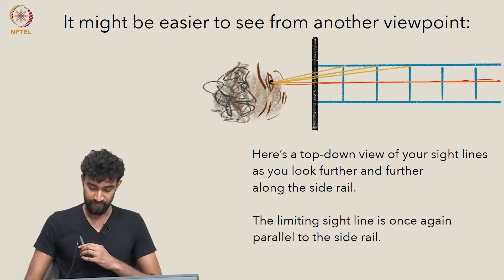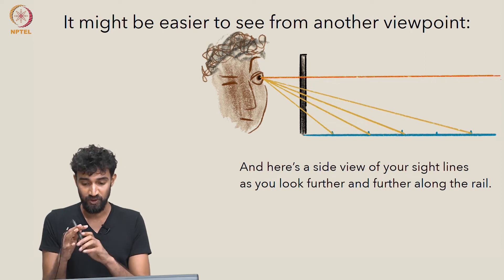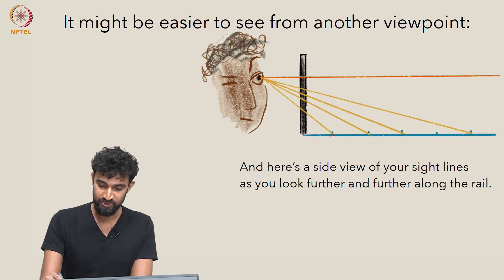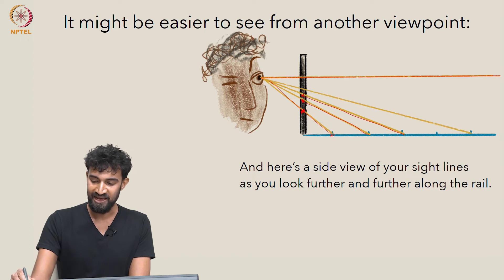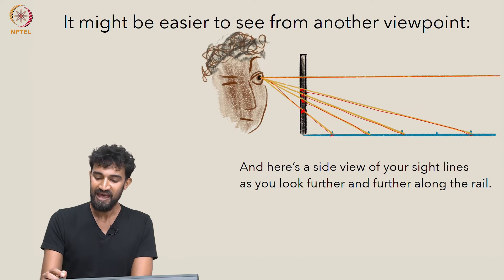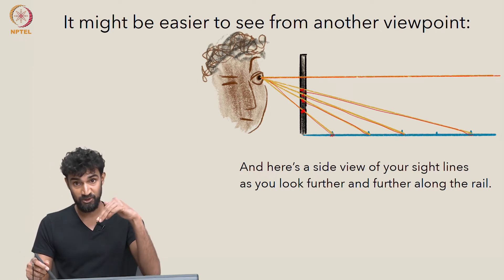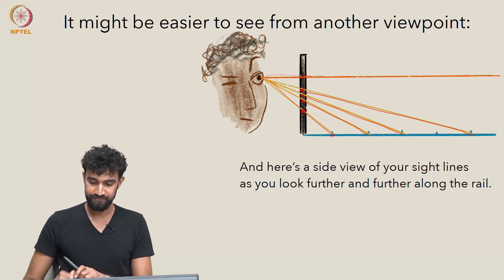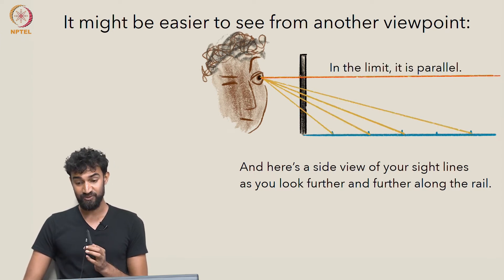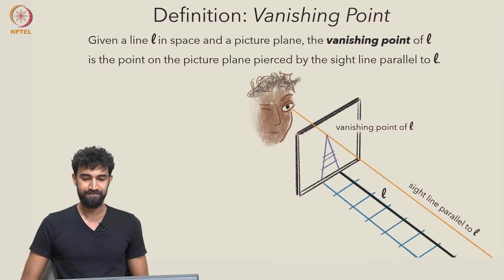Once again the limiting sight line we approach will be parallel to that side rail we were following. Let's look at it yet another time from a side view of the railway tracks. The first railway tie gives us an image point here, the second here, the third here, and the fifth one here. These image points along the side rail are clearly rising up as we look further and further down, and our limiting sight line will be this horizontal one — parallel to the side rail we are observing.